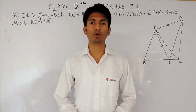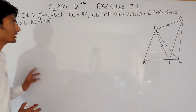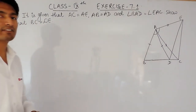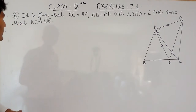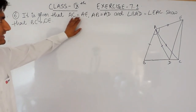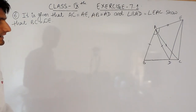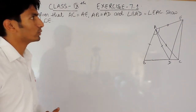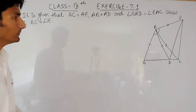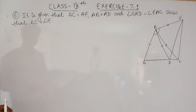Hello everyone, we are from True Maths and in this video we are going to solve question number 6 of exercise 7.1. The question says: it is given that side AC equals AE, AB equals AD, and angle BAD equals angle EAC. You have to show that side BC equals side DE.